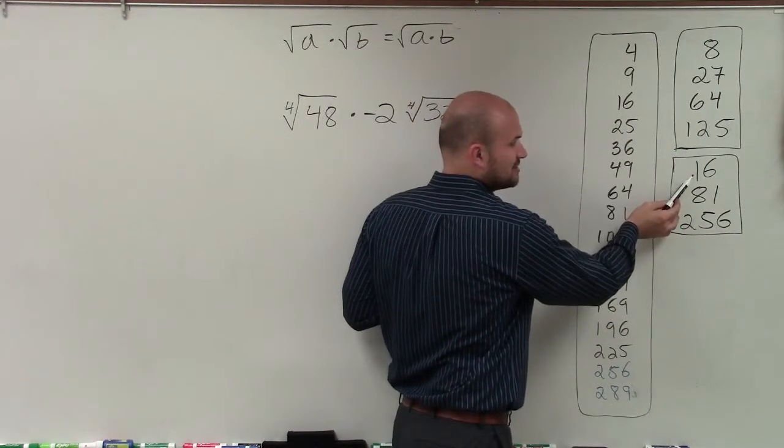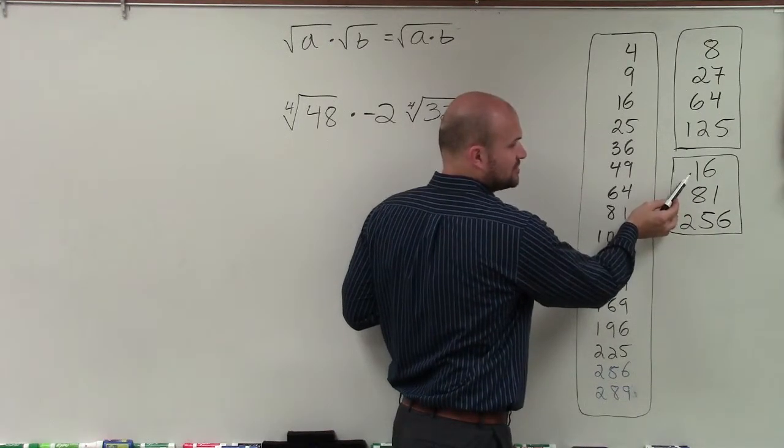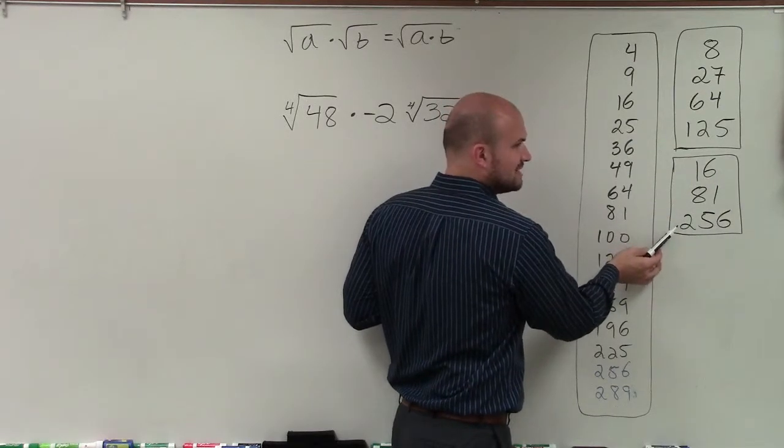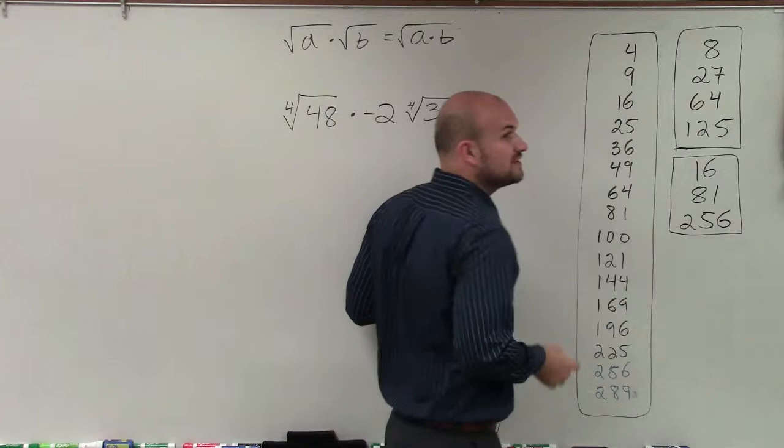Here's 16, which the fourth root of 16 is 2, the fourth root of 81 is 3, and the fourth root of 256 is 4. So these are what we call kind of like perfect fourth root numbers.